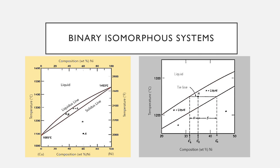Binary isomorphous systems: possibly the easiest type of binary phase diagram to understand is that characterized by the copper-nickel system. Temperature is plotted along the ordinate and the abscissa represents the composition of the alloy in weight percent and atom percent of nickel, ranging from 0 to 100 weight percent nickel. Three different phase regions appear on the diagram: an alpha field, a liquid L field, and a two-phase alpha plus L field.